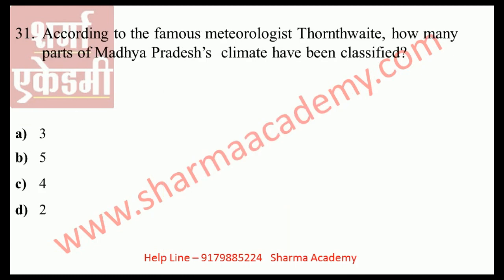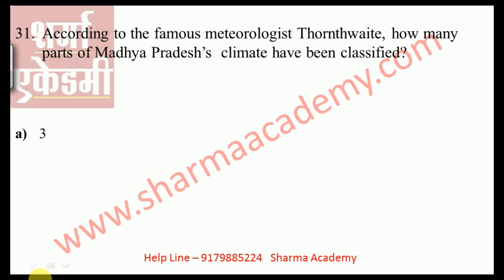According to the famous climatologist Thornthwaite, how many parts has the climate of Madhya Pradesh been classified into? The correct answer is three. Thornthwaite divided the climate of Madhya Pradesh into three parts: semi-arid, arid, and semi-arid climate, based on the water balance in addition to temperature and rainfall.